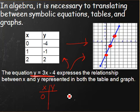So when x is zero, we get y is equal to three times zero minus four, which gives us negative four, which is the same in both our table and our graph.